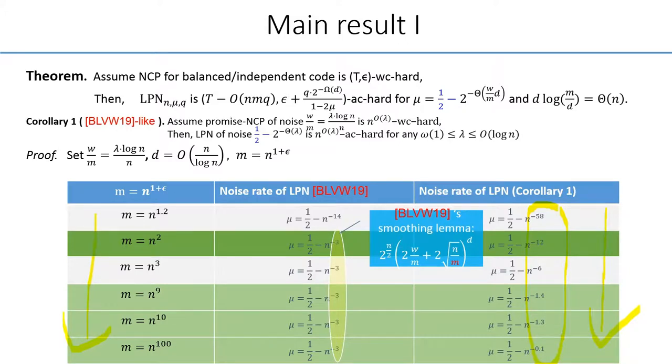So the second term, when it is sufficiently small, the first term will become dominant. Namely, we don't get a better bound, no matter how large the value of M is. An advantage of our result is that we can actually trade larger M for better noise rate.